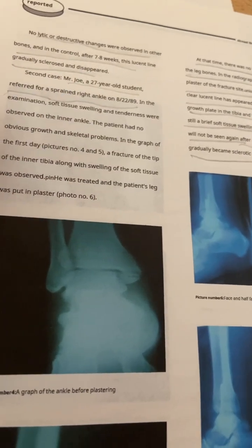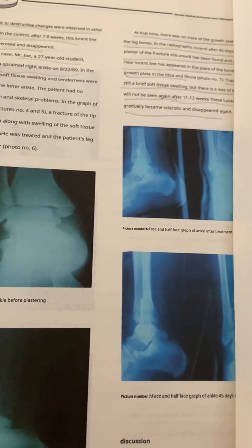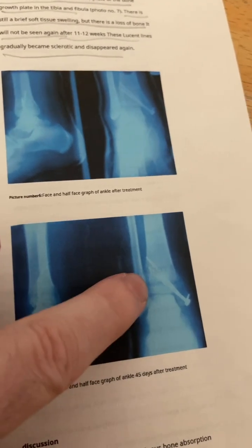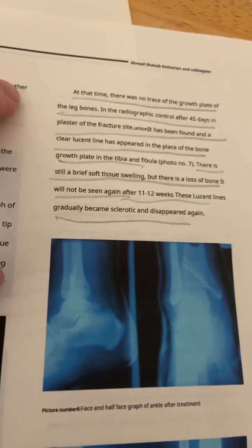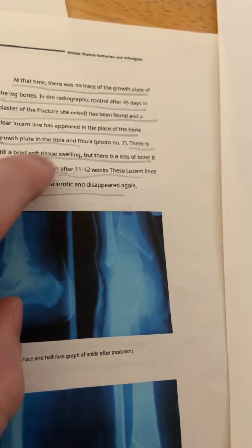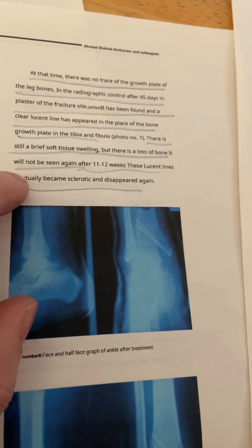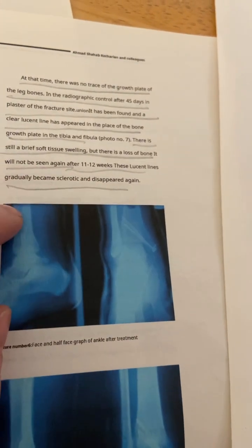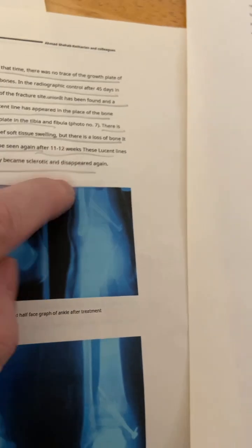A 27-year-old college student referred with a sprained right ankle. So at 27 years old, this growth plate has been closed for a long time. So if his growth plate can reappear — which you can see here — that's very exciting. At the time, there was no trace of the growth plate in the long bones. In the radiographic control after 45 days in plaster of the fracture site, a clear lucent line has appeared in place of the bone — growth plate in the tibia and fibula. There is still brief soft tissue swelling, but there is loss of bone. It will not be seen again after 11 to 12 weeks — these lucent lines gradually become sclerotic and disappeared again.